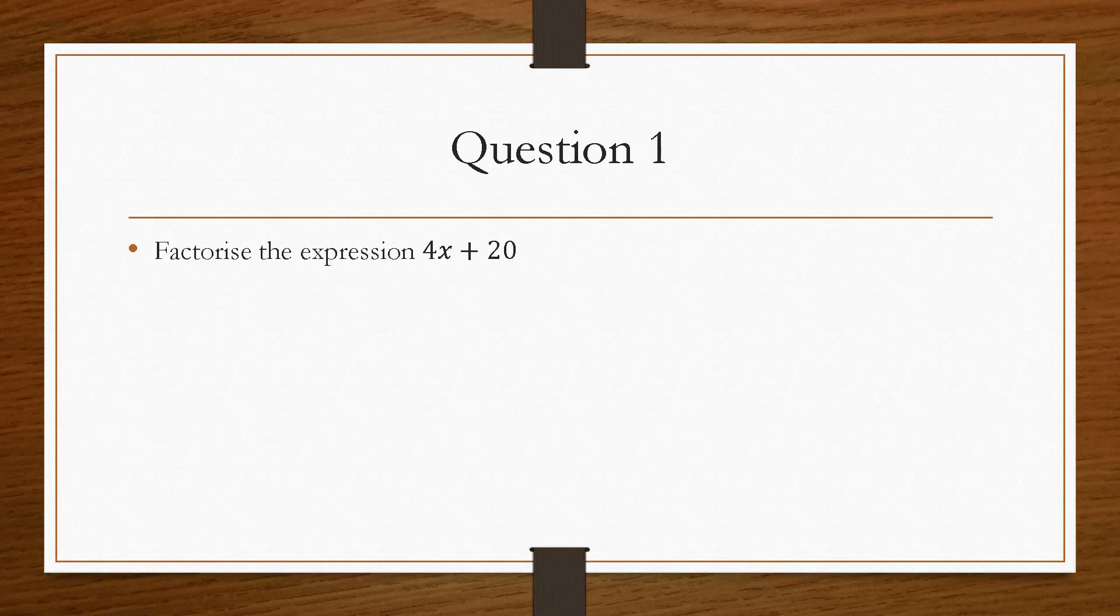So if we take a look at question number one, it asks us, factorise the expression 4x plus 20. Now the two questions that we just asked before, we've got to ask them again. So question number one was, do they have any numbers that are common to both? In this case, the answer is yes. 4 is the highest number that can divide into each of the two terms, both the 4x and the 20.